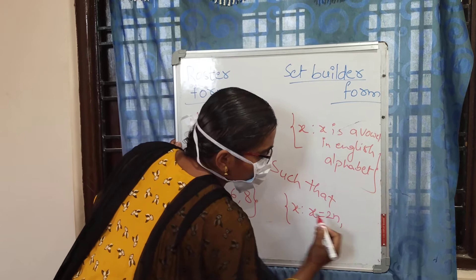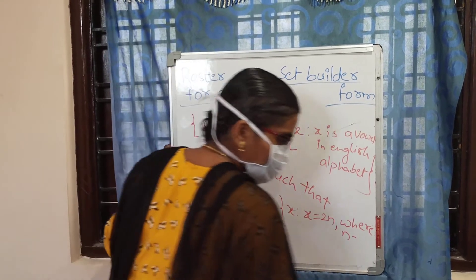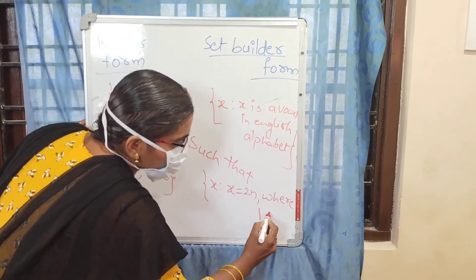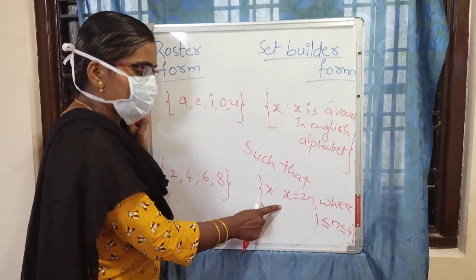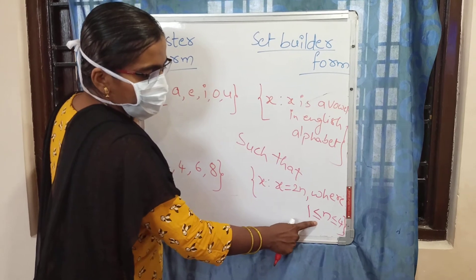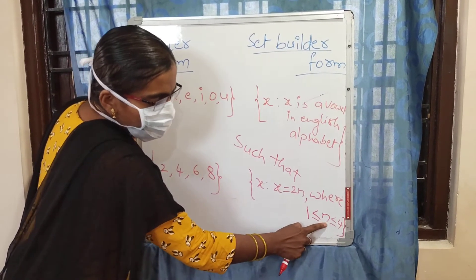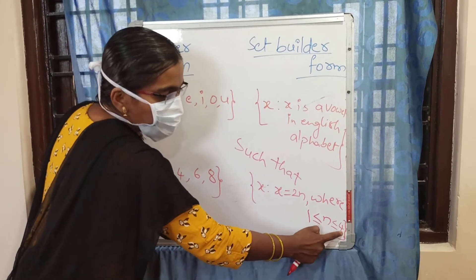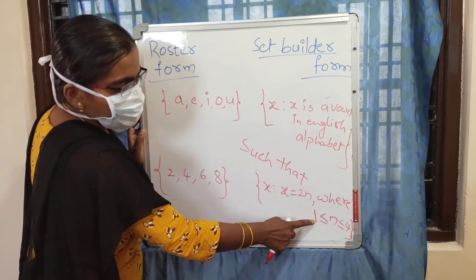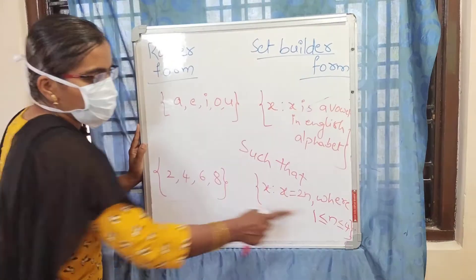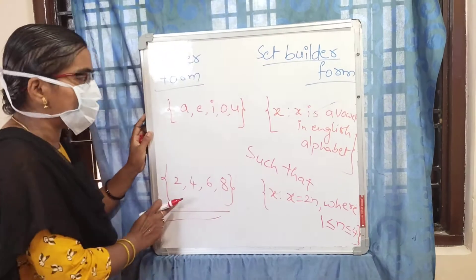The set builder form is: x such that x equals 2N, where 1 ≤ N ≤ 4. This means x = 2 × N, and the N value goes from 1 to 4. If N=1, 2×1=2. If N=2, 2×2=4. If N=3, 2×3=6. If N=4, 2×4=8. So we get the same set again. This is set builder form, and the other was roster form.